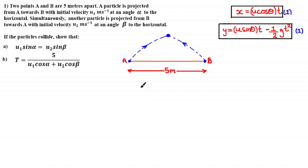Welcome to this tutorial — the last part of this sequence of videos on show-that questions for projectile motion. The question states: two points A and B are five meters apart. A particle is projected from A towards B with initial velocity u₁ meters per second at angle alpha to the horizontal. Simultaneously, another particle is projected from B towards A with initial velocity u₂ meters per second at angle beta to the horizontal.